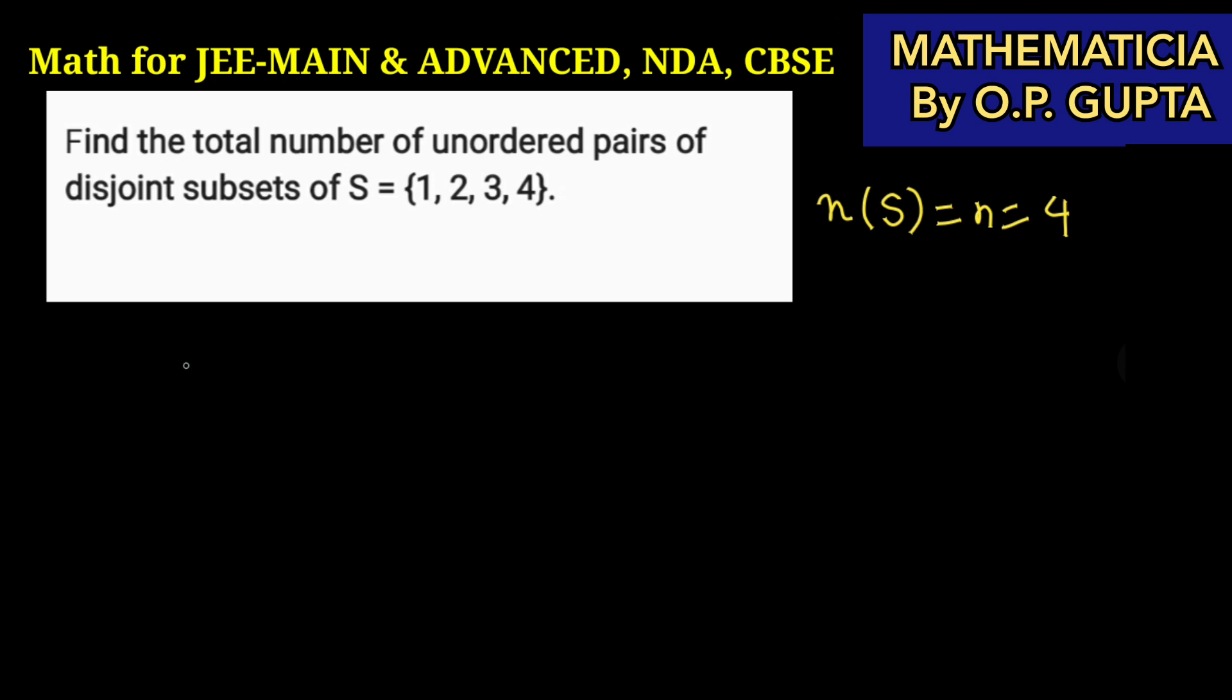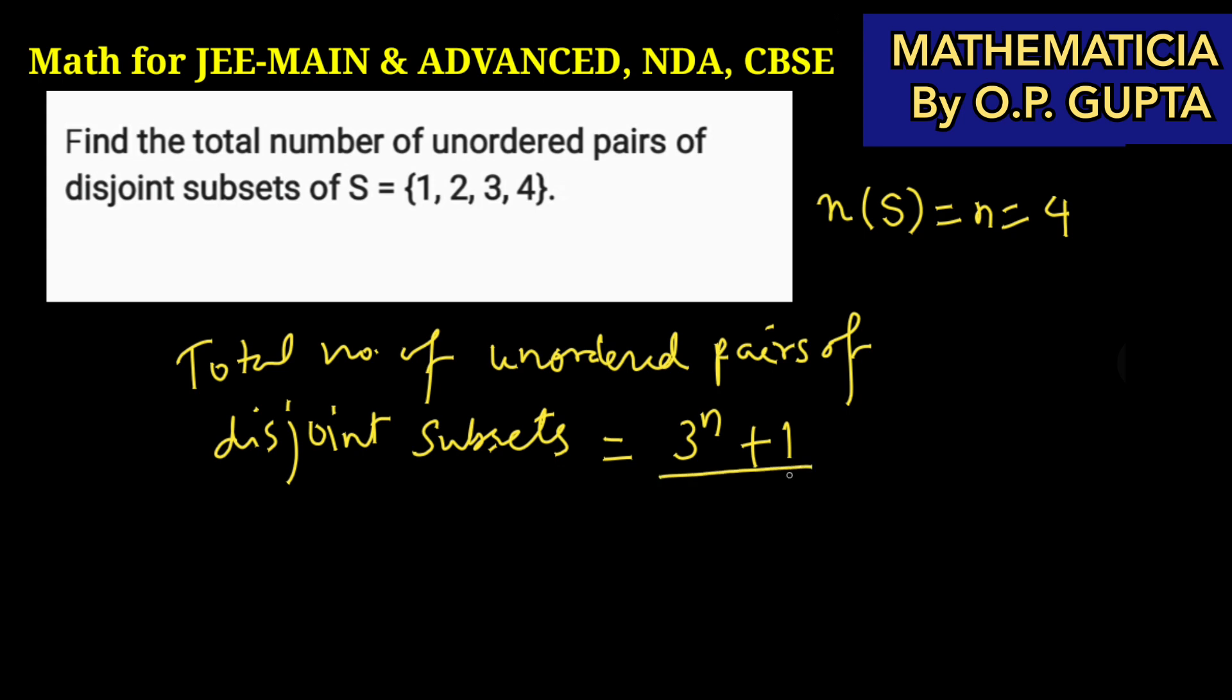The formula that we are going to use is: the total number of unordered pairs of disjoint subsets of any set having n number of elements is given by this formula.